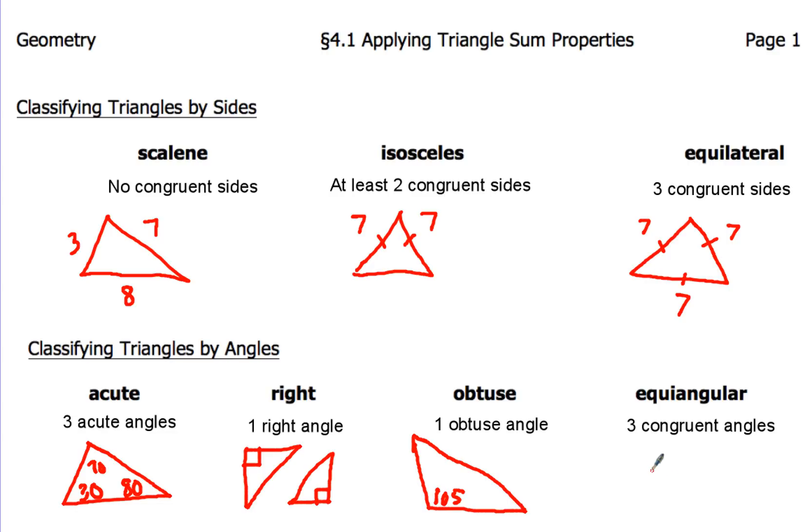Now the equiangular triangles, ooh that's one of my favorite ones. Say that word three times real fast. Equiangular, equiangular, equiangular. That's right. Now this triangle is going to have three congruent angles. So we can mark it like this, this, and this, and that means all three of those angles are going to be congruent.